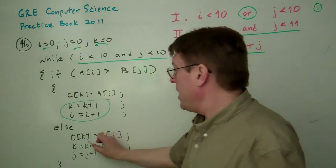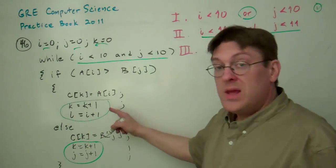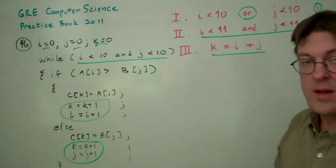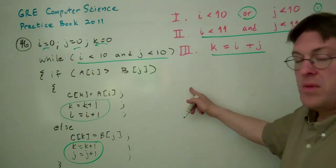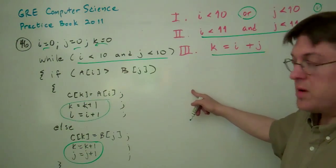Every time K gets incremented, either I or J gets incremented, but not both. So every time I goes I plus 1, K gets K plus 1.